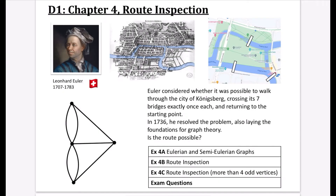We are now on to D1 Chapter 4, Route Inspection. This is where the origins of graph theory — which is pretty much what most of D1 is all about — really comes from. We have this mathematician called Euler, who we've already come across before.